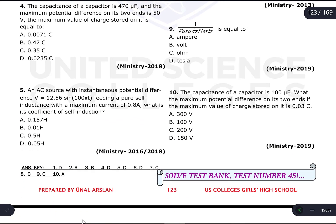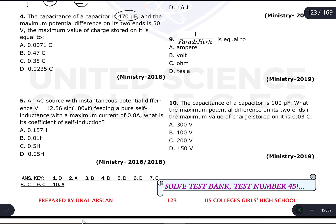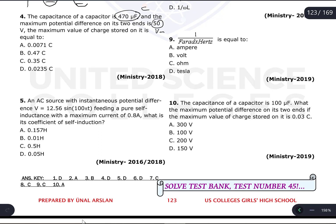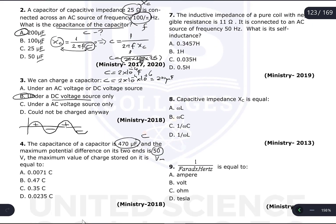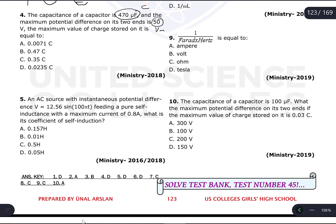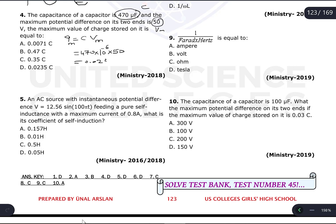Question number four: the capacitance of a capacitor is 470 microfarad and the maximum potential difference on its ends is 50 volts. This is similar to question one. Q = C × V_max, so we multiply 470 × 10⁻⁶ by 50. Using the calculator: 470 × 10⁻⁶ × 50 = 0.0235. So the maximum charge is 0.0235 coulombs.